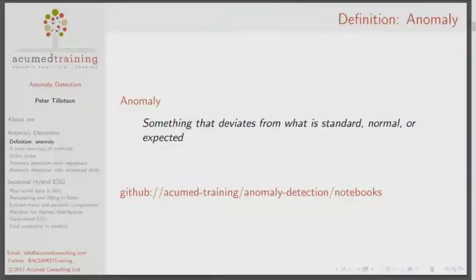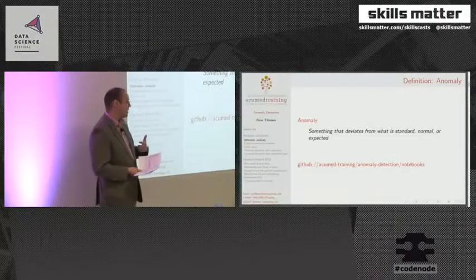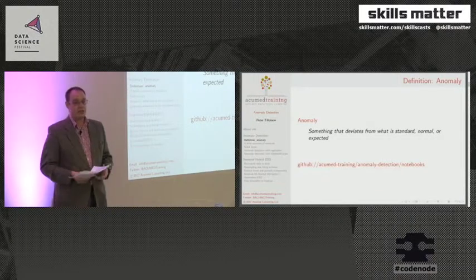It's nice to get the semantics out of the way early on. Something that deviates from what's standard — an anomaly, outlier, unexpected deviant. I work a lot in security, so I'm often looking for things that may be indicative of unusual behavior in somebody's account: unusual behavior in terms of access patterns, number of emails.